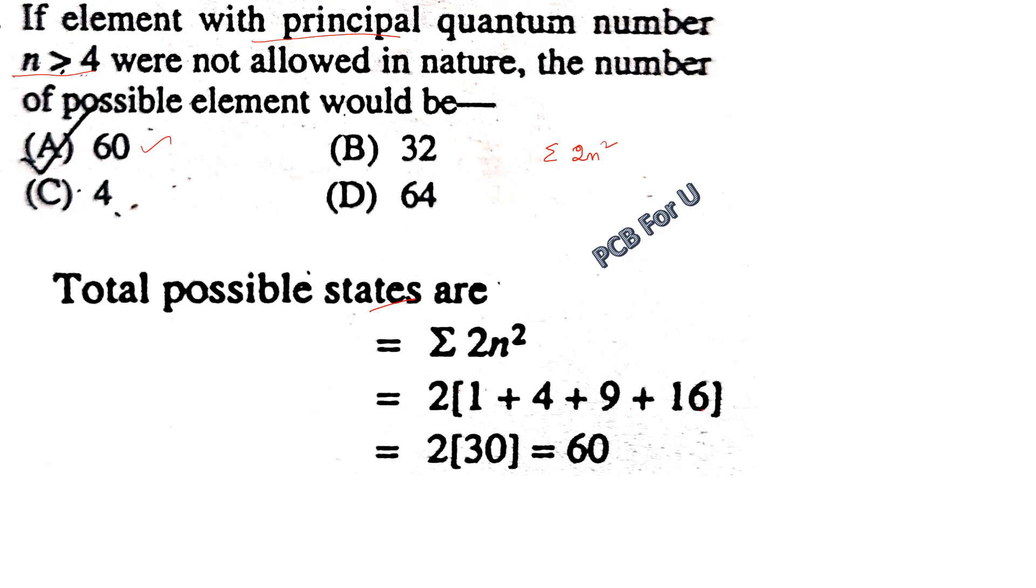So the number of possible elements would be 60. Answer A is correct. Thank you for watching, subscribe for the next video.